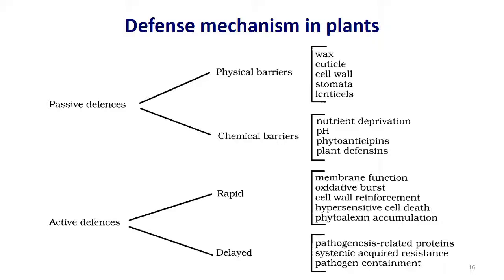In passive defense, physical barriers include wax, cuticular layer, cell wall, stomata and lenticels. Chemical barriers include nutrient deprivation, pH, phytoanticipants and plant defenses. In active defenses there are two categories: rapid and delayed. Rapid defense mechanisms include membrane function, oxidative burst, cell wall reinforcement, hypersensitive cell death and phytoalexin accumulation. Delayed responses include PR proteins (pathogenesis related proteins), SAR (systemic acquired resistance) and pathogen containment.